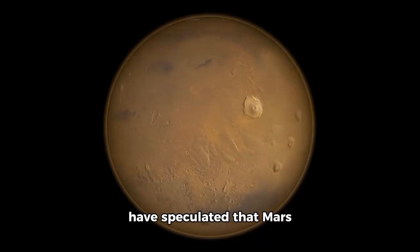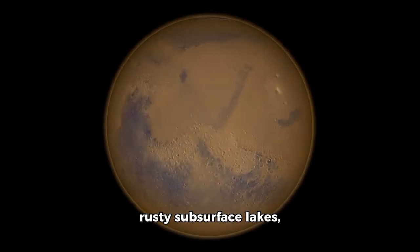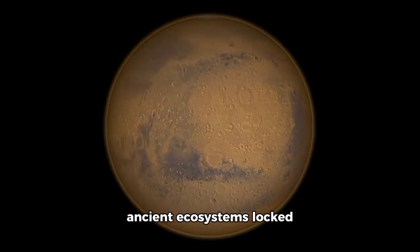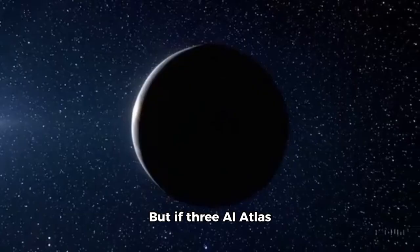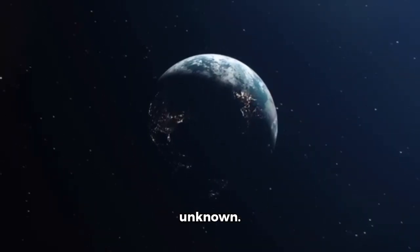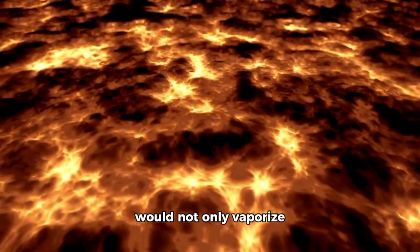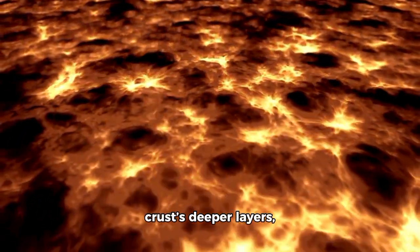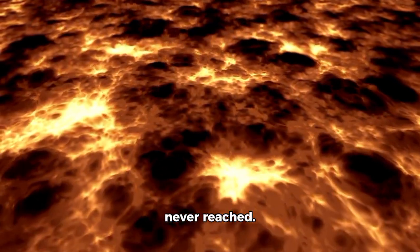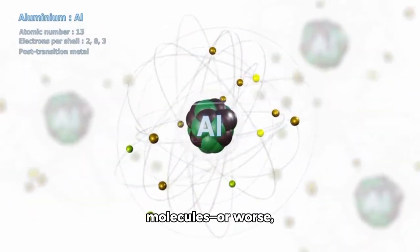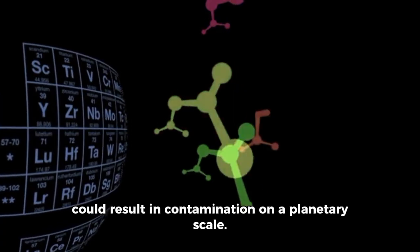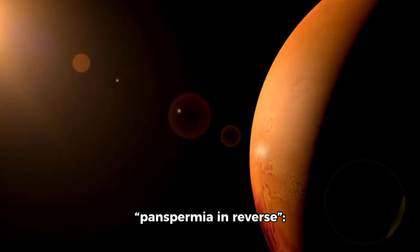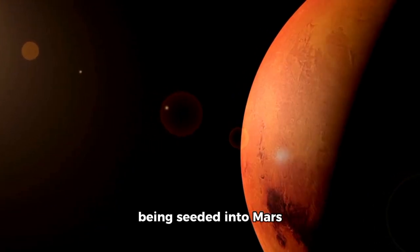For years, scientists have speculated that Mars may still harbor life today, deep beneath its rusty subsurface lakes, dormant microbes, and ancient ecosystems locked under permafrost. But if 3E Atlas strikes, all of that becomes a biological unknown. The impact's extreme heat would not only vaporize the surface, it would crack open the Martian crust's deeper layers, exposing reservoirs we've never reached. And if 3E Atlas carries organic molecules or worse, synthetic biology embedded in its outgassing trails, the fusion of Earth-independent evolution with Martian biology could result in contamination on a planetary scale. Some biologists call this panspermia in reverse: not life spreading from Mars to Earth, but life being seeded into Mars deliberately.